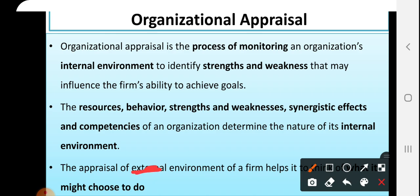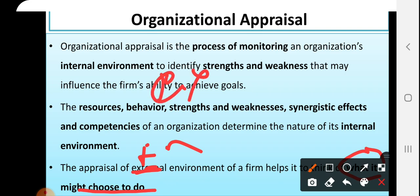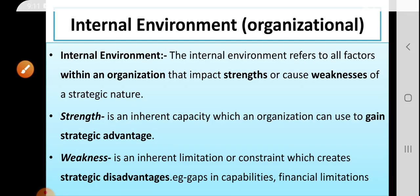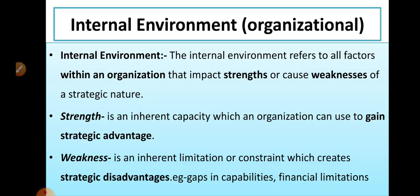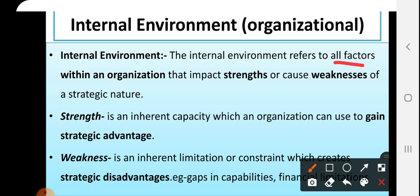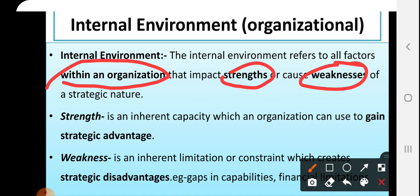The appraisal of the internal environment of a firm helps to think of what it might choose to do. It helps to answer questions like what it might choose to do, while external environment answers what it can do. This internal environment refers to all factors within an organization — those factors which impact strengths and weaknesses of a strategic nature. So the company has to take the benefits of strength and overcome weaknesses to provide strategic advantages.